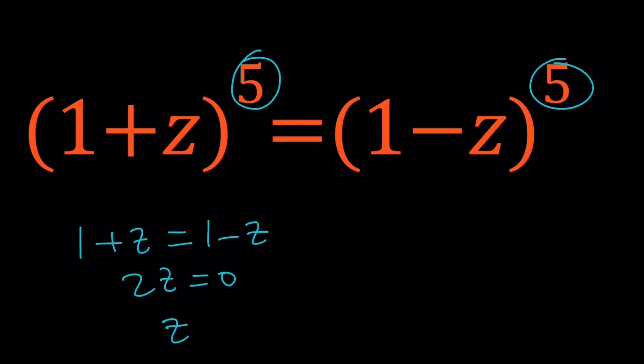And that means 2z is equal to 0. z=0 is going to be an immediate result. So z=0 is obviously a solution. If you plug it in, you're going to notice that it satisfies the equation.